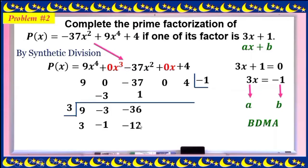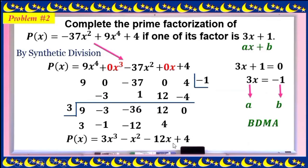Continuing the synthetic division: -37 divide by -3 gives -12 — wait, continuing the B-dima-dima steps: 12, then divide gives 4, multiply gives -4, add to get 0. The remainder is 0, confirming 3x + 1 is a factor. The depressed equation is 3x³ - x² - 12x + 4.